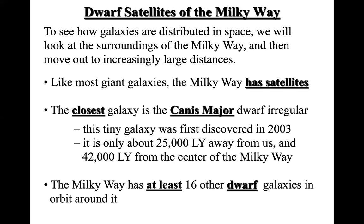The closest galaxy to us is called the Canis Major dwarf irregular galaxy. It is a tiny galaxy discovered in 2003, and it is only about 25,000 light years away from us.